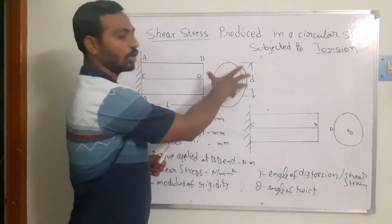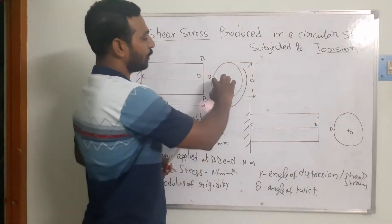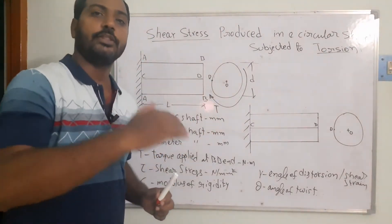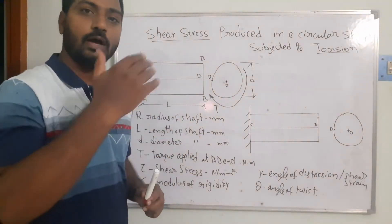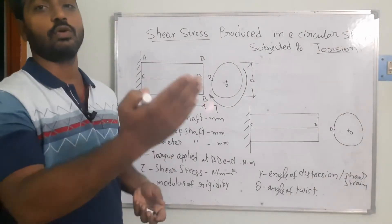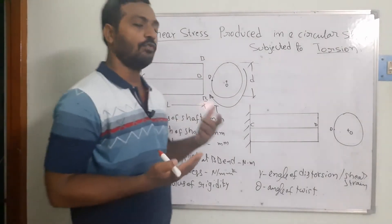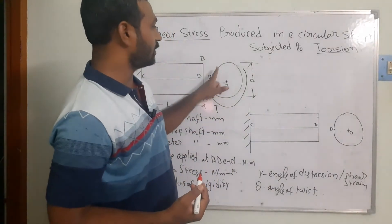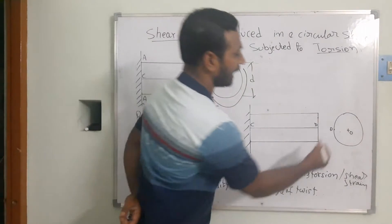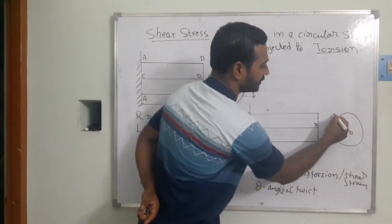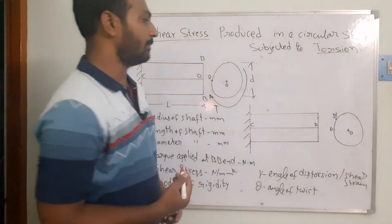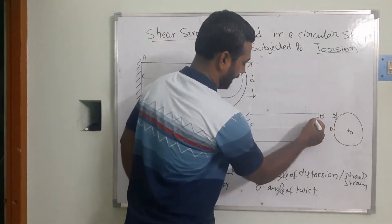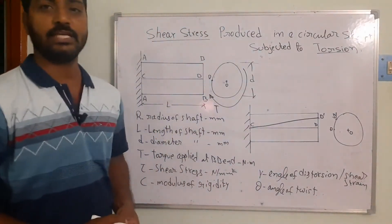Once the torque acts, the material starts to rotate. Point D on the outer surface shifts to a new position D', because the outer surface undergoes distortion — that is, deformation. I am showing this new position as D-dash in the diagram.